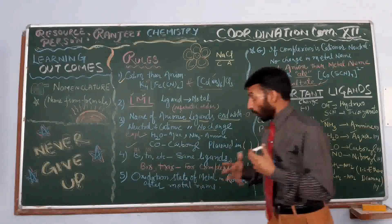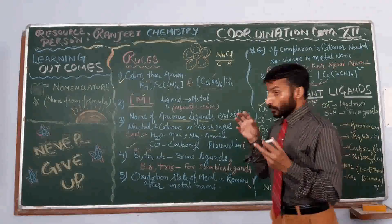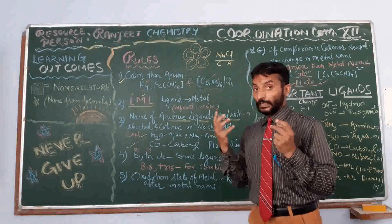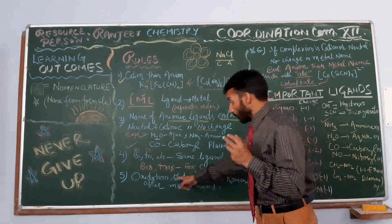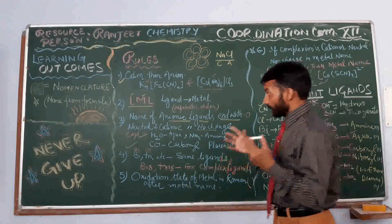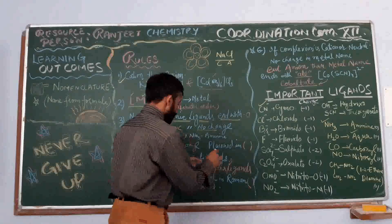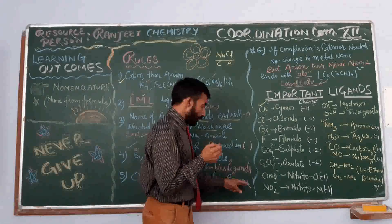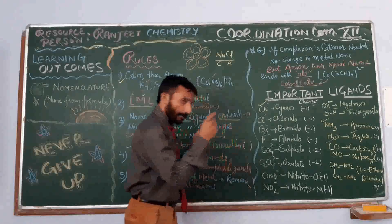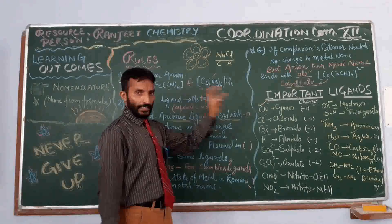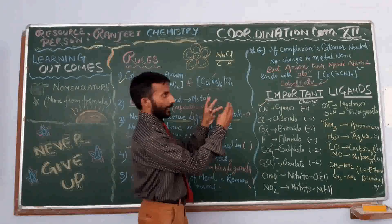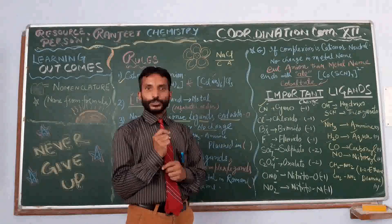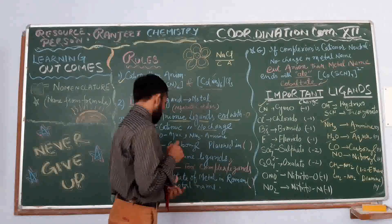The fifth rule is the oxidation number. We have to calculate the oxidation number, as we learned earlier — it is a very important term here. The oxidation number is written in Roman numerals, in parentheses, after the name of the metal. After the metal's name, we write the oxidation number in parentheses after calculation.